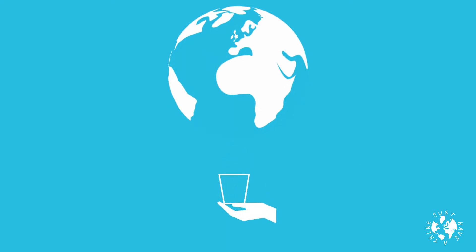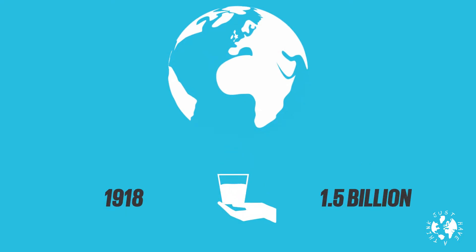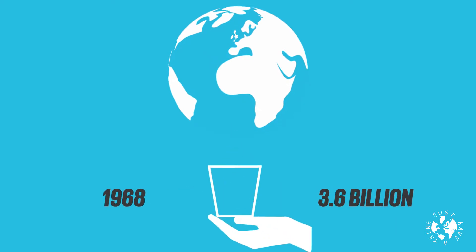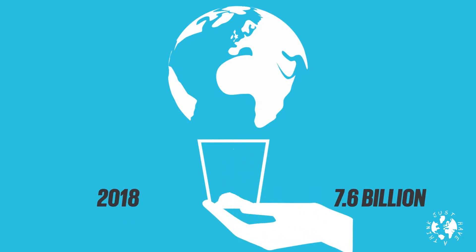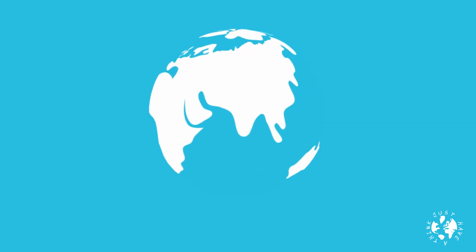The water that was shared between 1.5 billion people 100 years ago in 1918 is the same amount of water shared between 3.6 billion people 50 years ago in 1968, and the same amount that needs to be shared between 7.6 billion people today — and potentially over 10 billion people in the second half of the 21st century. But of course water is not distributed evenly around the world.